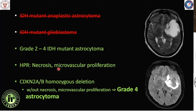On histopathology, high-grade tumours can have necrosis and microvascular proliferation; when these features are encountered, tumours are labelled IDH mutant grade 4 astrocytoma. Another important molecular marker is homozygous deletion of the CDKN2A/B gene. Even in the absence of necrosis or microvascular proliferation, when this homozygous deletion is positive, the tumour is termed grade 4 astrocytoma, as it is a harbinger of far worse prognosis.